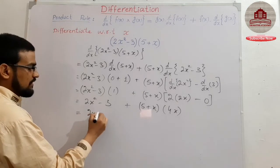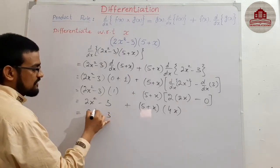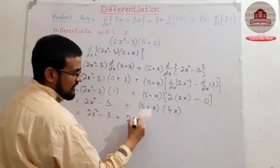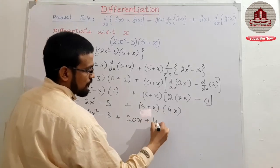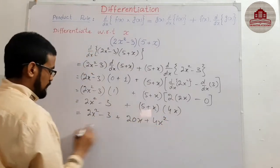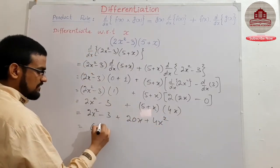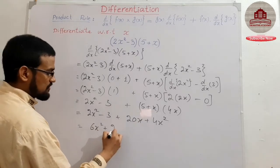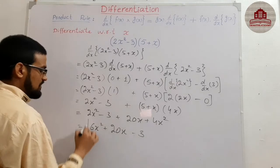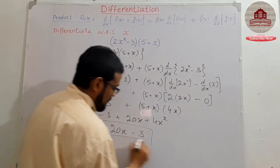And then simplify and get a final result. 5, 5, 4s are 20x, and 4x². 2x², 4x², it means 6x² plus 20x minus 3. This is your final result.